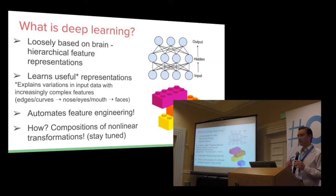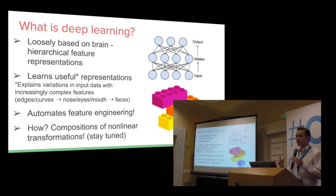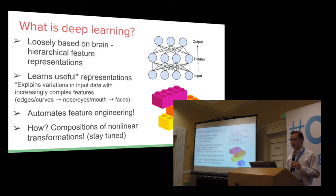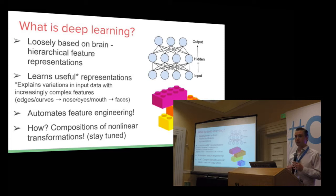A useful representation is something that can explain away the variance in your input data by increasingly complex features. An example of this is with images. If you think of a normal face, you can have lower level features learned that are your edge detectors, your curves. These lower level features can piece together to form the nose or eyes, and these features can then piece together in higher levels to form a representation of a face. This is useful because it automates feature engineering.